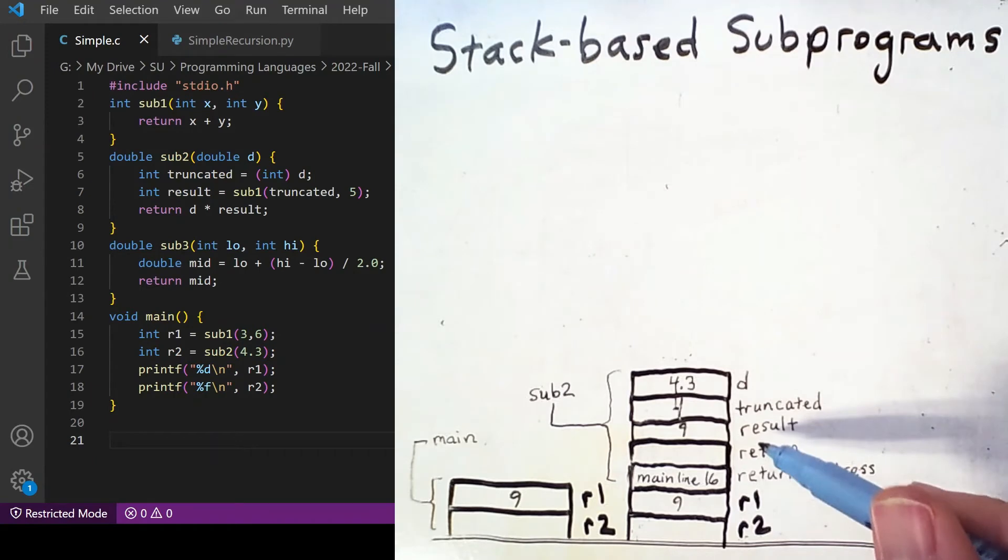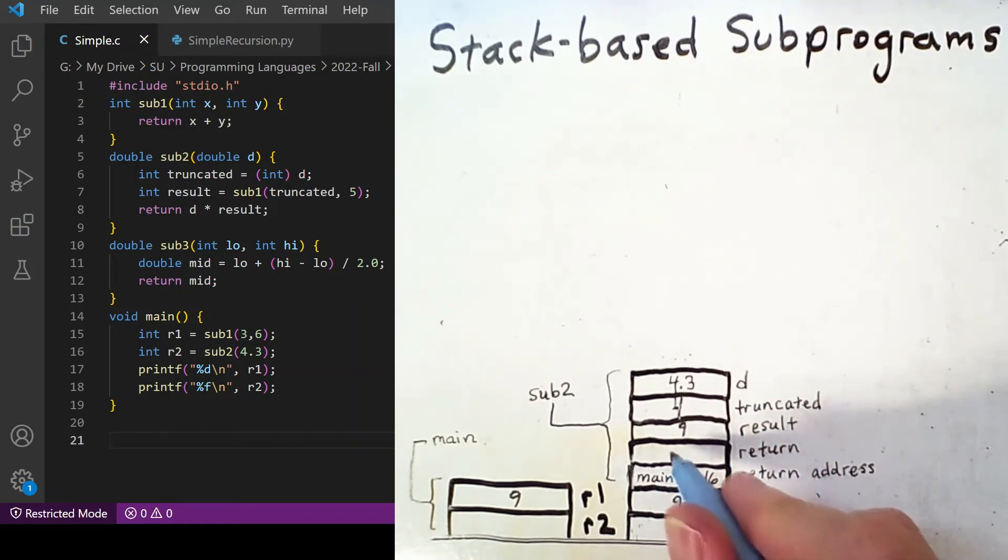Now that the value of result is filled in, in the activation record, we can compute the return value of D times result and get 38.7. And then this function is finished executing, so we will remove it from the stack and also give this return value to R2.